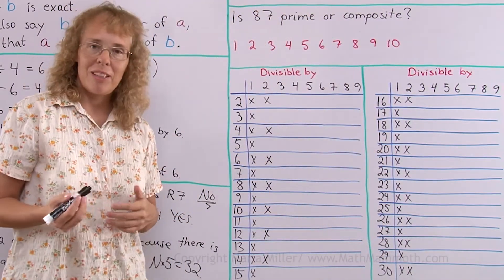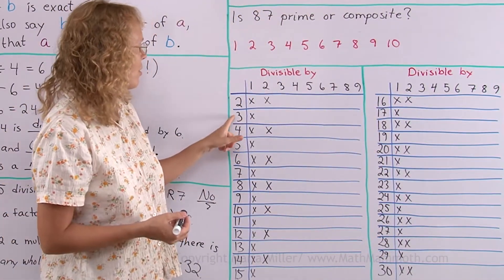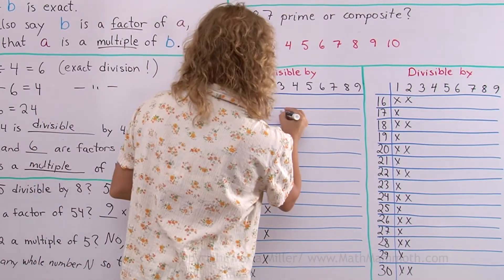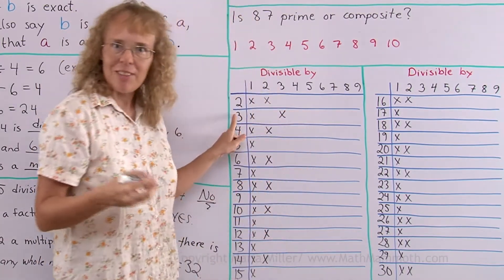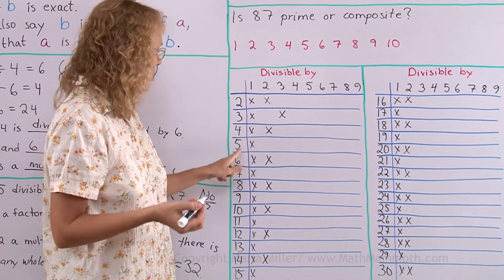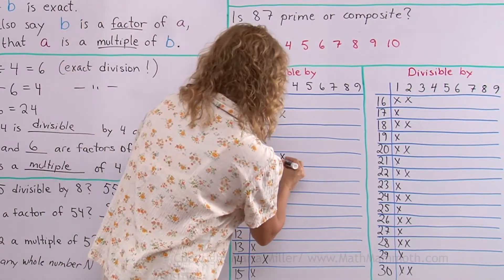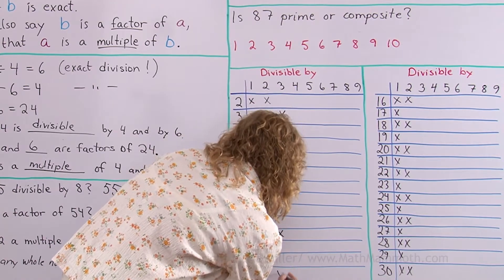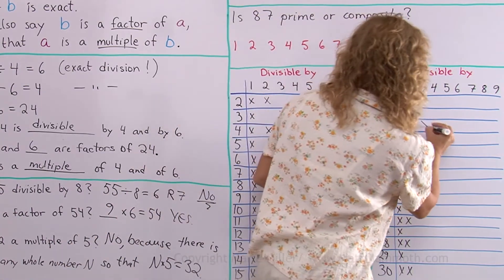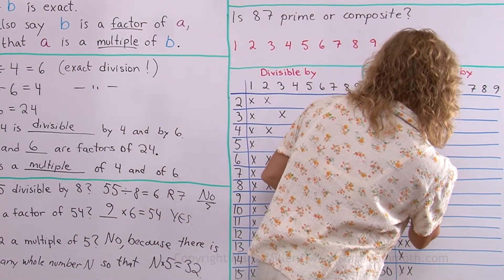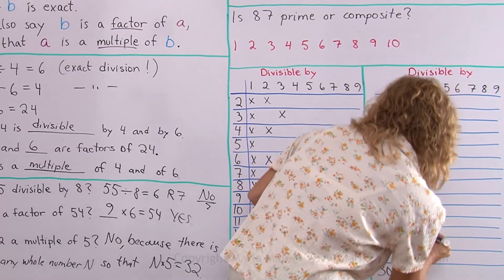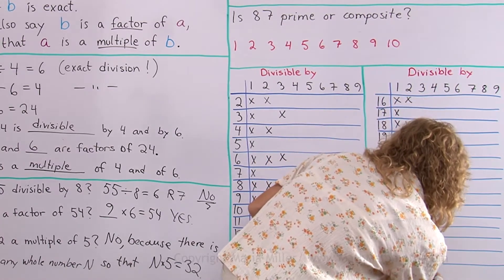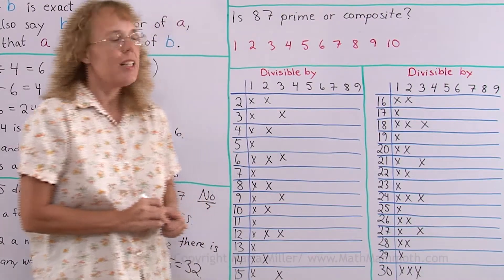Then we'll look at 3. Which one of them are divisible by 3? 2 is not. 3 is the first one that's divisible by 3, and then after that, every third number is divisible by 3. So 6 is next, and then 9, and then 12, and then 15. And over here, I have 18, 21, 24, 27 and 30 that are divisible by 3.